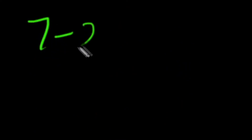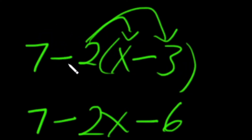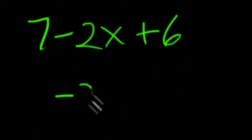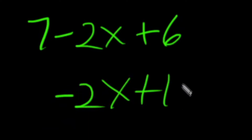So now that looks like 7 minus 2x. This time, negative 2 times negative 3 is a positive 6. Combine like terms: negative 2x plus 13.